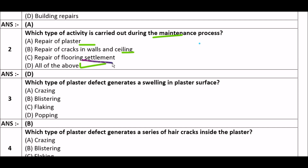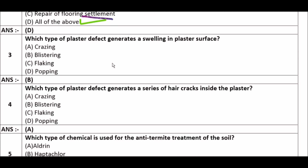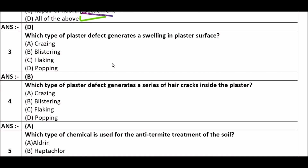Next question: Which type of plaster defect generates a swelling in the plaster surface? Option A: increasing, option B: blistering, option C: flacking, option D: popping. The right answer is option B, blistering. Blistering type of plaster defect generates a swelling in the plaster surface.